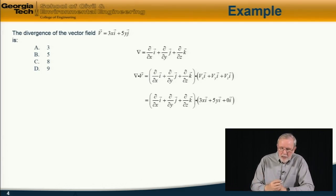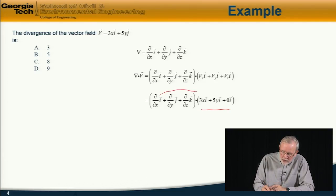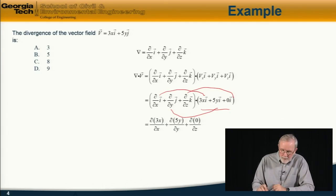The divergence is the dot product between the del operator and the vector field. So in this case, this becomes d by dx of i, and then write down the vector field here, which is 3xi plus 5yi plus zero times k. So to evaluate this, we use our usual rules of evaluating a dot product. In other words, this term multiplied by this term plus this times this plus this times this.